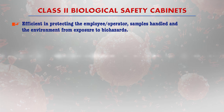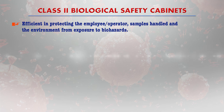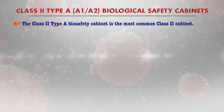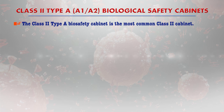Class 2 cabinets are highly efficient in protecting the employee and operator, keeping samples contamination-free, and protecting the environment from biohazardous materials. These cabinets are also suitable for work with microbial agents assigned to biosafety levels 1, 2, and 3. Class 2 type A biosafety cabinets are the most common class 2 cabinet, with a common plenum from which 30% of the air is exhausted and 70% is recirculated to the work area as downflow.